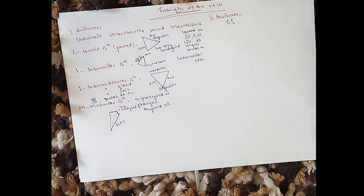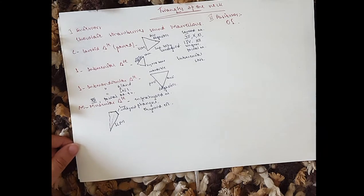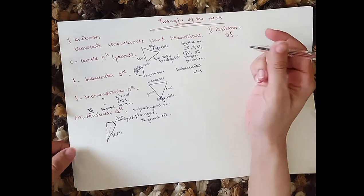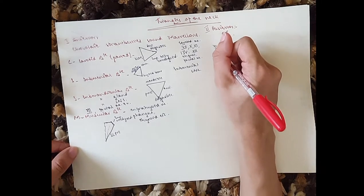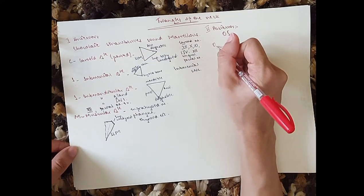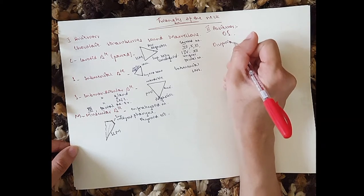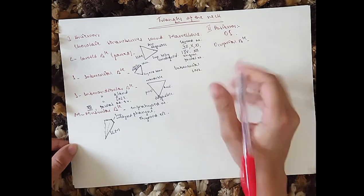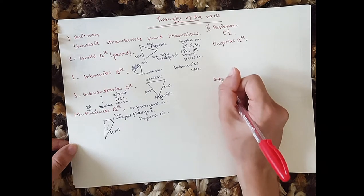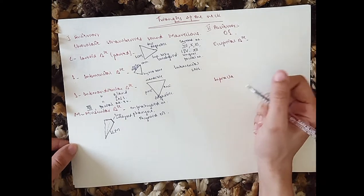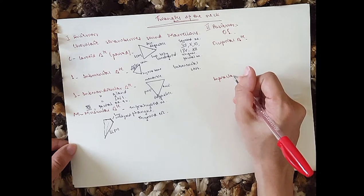And that is it for the anterior triangles. For the posterior, we've got OS. First is the occipital triangle, and then we've got the supraclavicular — also called the omoclavicular or subclavian triangle.